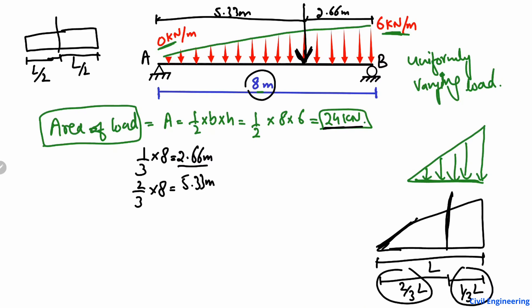The next step is to use the equilibrium equations to find the support reactions. We consider RA as the support reaction at point A, and RB at point B. The roller support gives only a vertical reaction. There is also a horizontal reaction RAX, but it equals zero because there is no horizontal load acting on the beam.